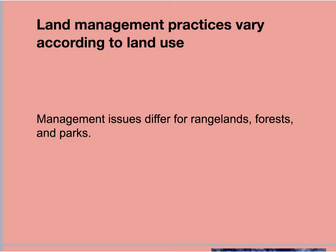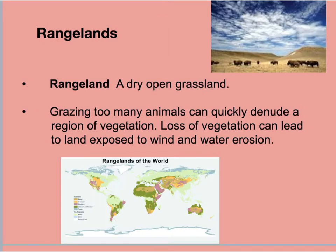A rangeland is an open, dry area of grassland, primarily used for grazing cattle, which is most common in the western United States. Rangelands are ecosystems particularly susceptible to forest fires and other environmental disturbances. When humans overuse or overgraze these rangelands, it becomes easy to lose the biodiversity found there.